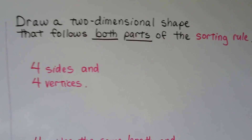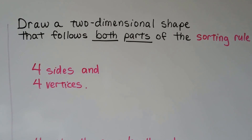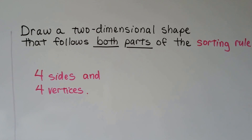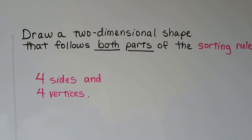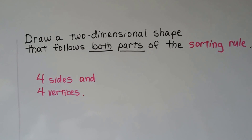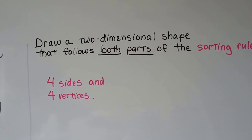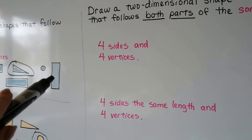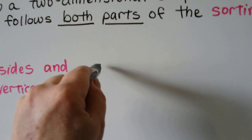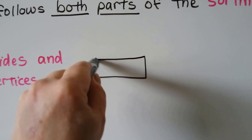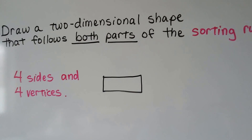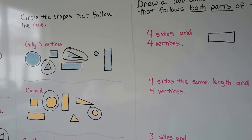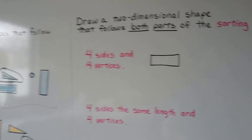It says: draw a two-dimensional shape that follows both parts of the sorting rule. There are two parts: it's got to have four sides and it has to have four vertices. A rectangle has four sides and four vertices, so we could draw a rectangle. A square also has four sides and four vertices.